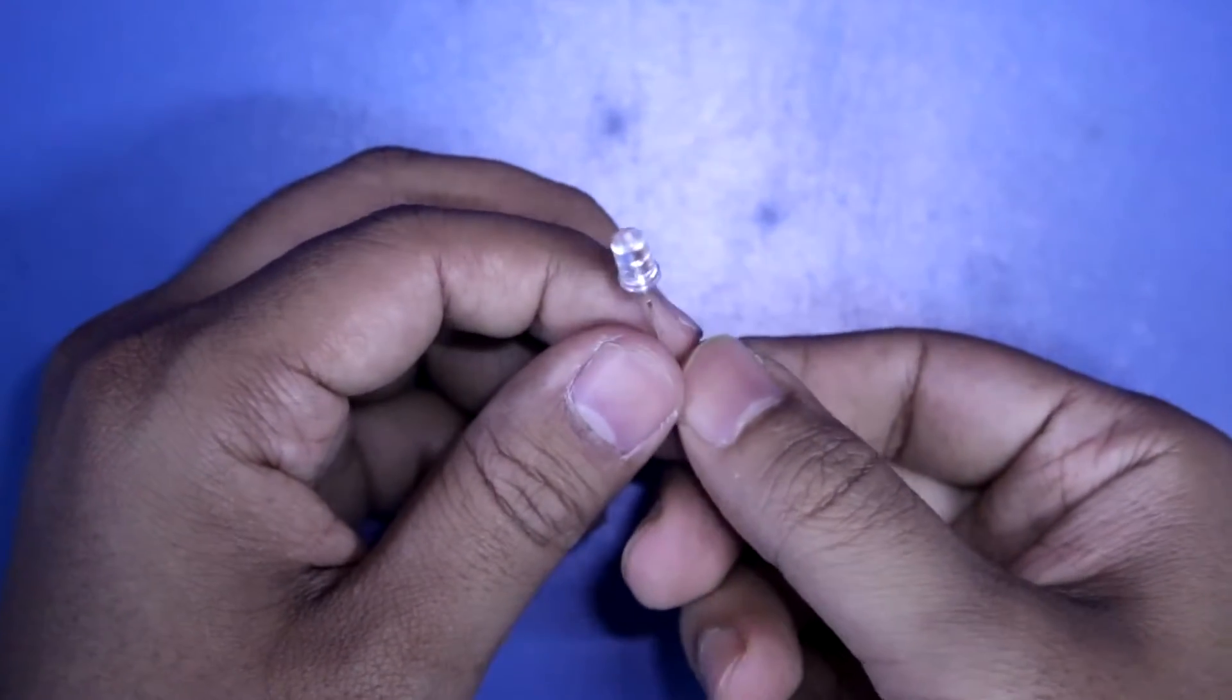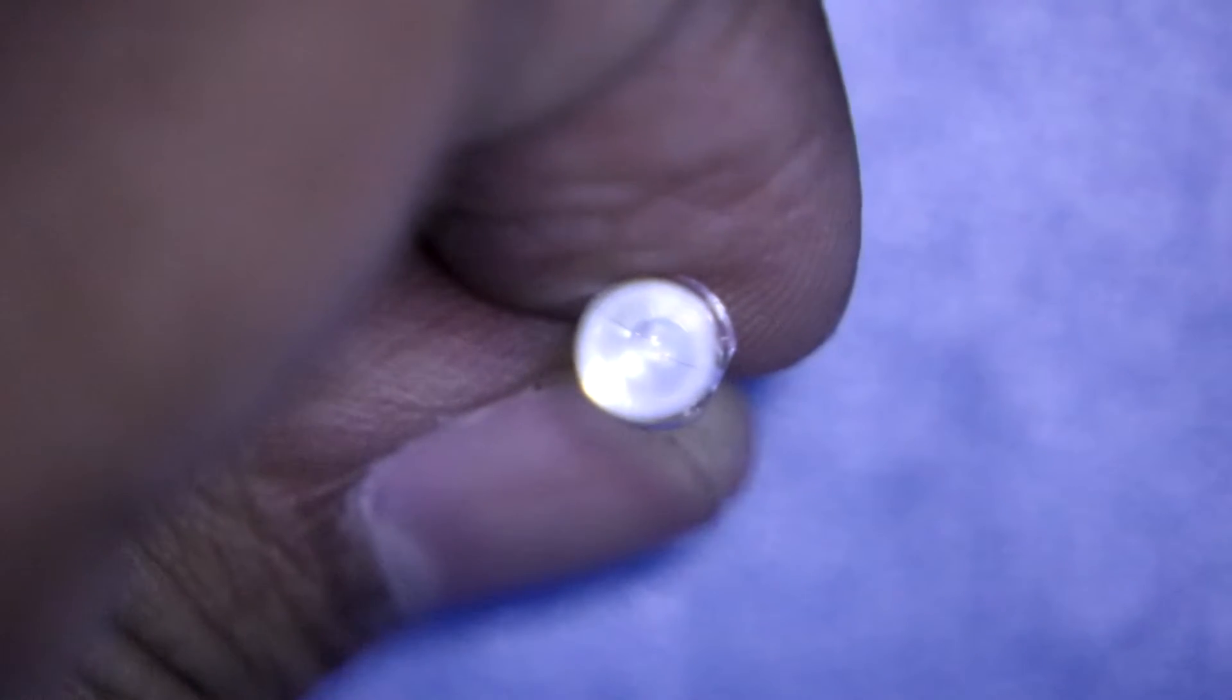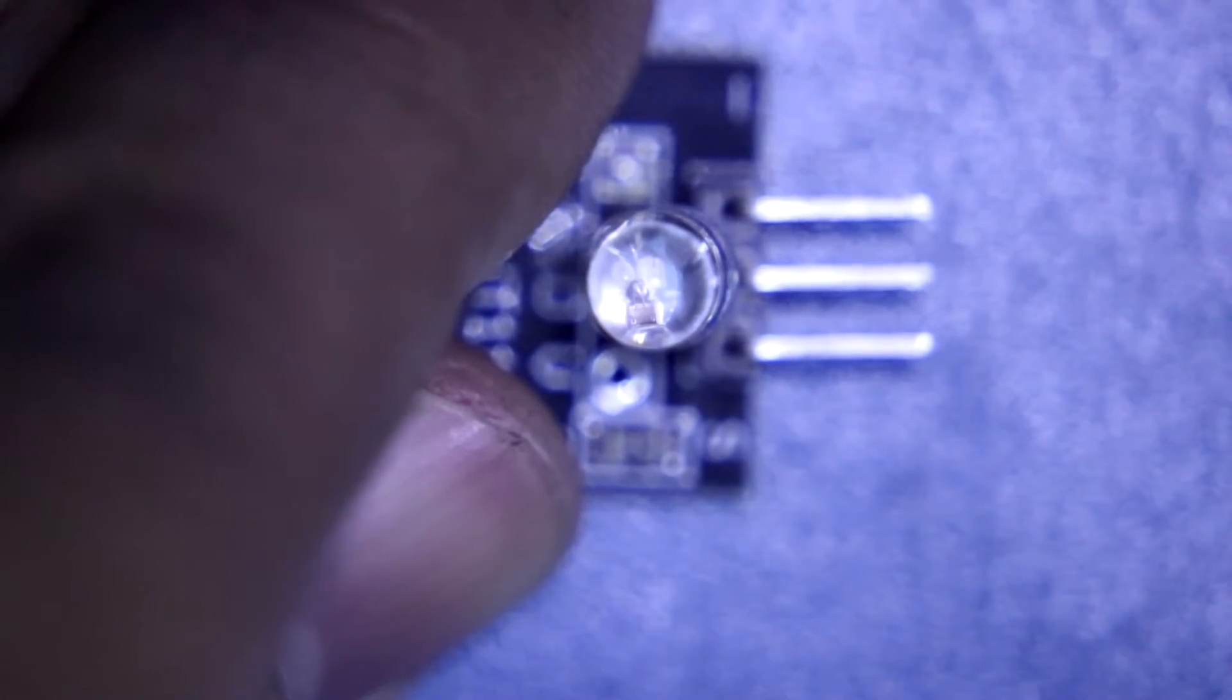This is a normal single color LED. You can see there is nothing inside the LED other than two wires. Inside the module LED there is an IC and three LEDs.